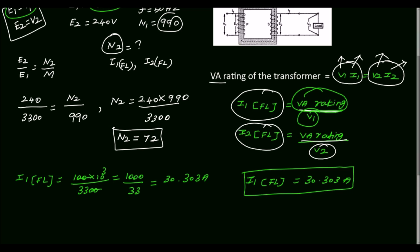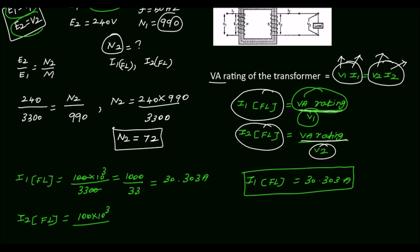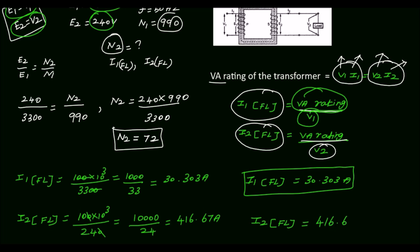Next, we will calculate the secondary full load current I2, which is equal to the VA rating divided by V2. The VA rating is 100 into 10 to the power 3. For an ideal transformer, E2 equals V2, which equals 240 volts. So I2 equals 100,000 divided by 240, which equals approximately 416.67 amperes. So the secondary full load current I2 is equal to 416.67 amperes.